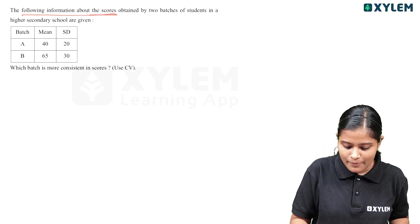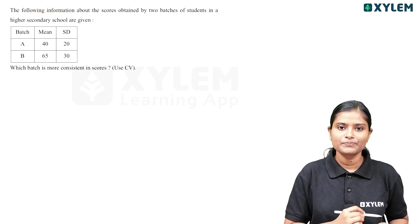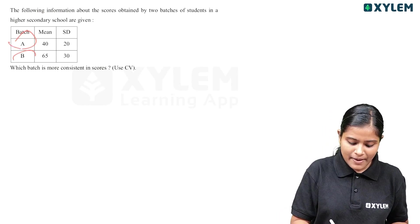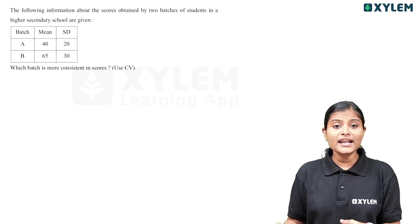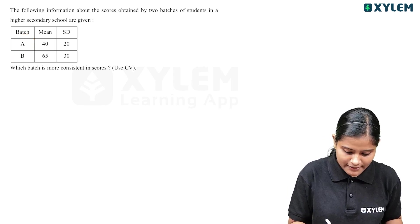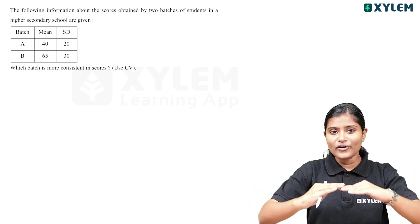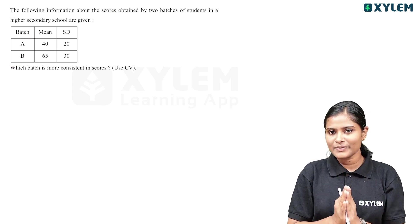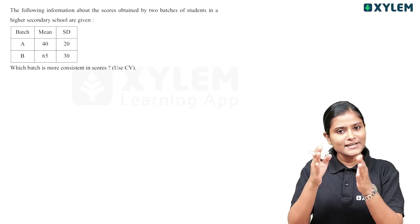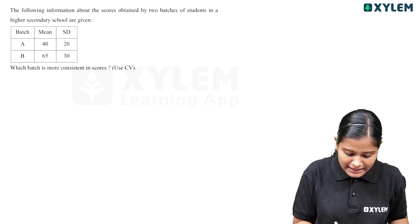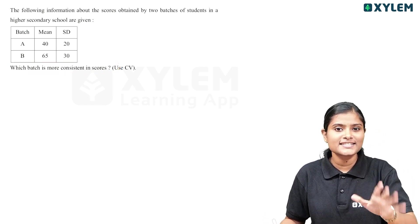The following information about the scores obtained by two batches of students in a higher secondary school are given. They call it Batch A and Batch B — that is Plus 1 A and Plus 1 B. The mean and standard deviation for scores in both batches are given. Which batch is more consistent in scores?